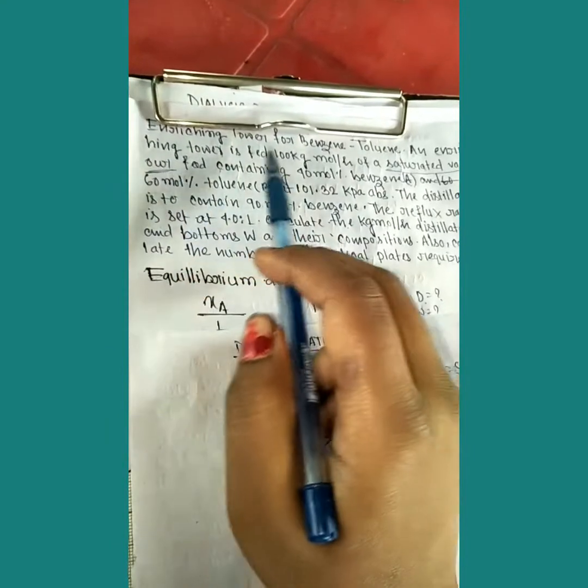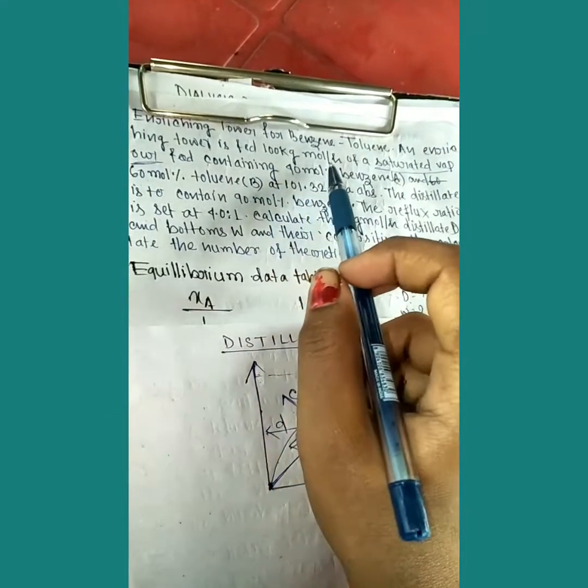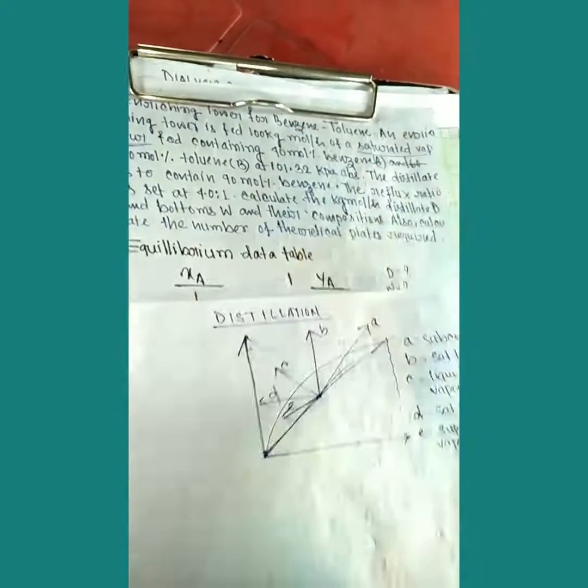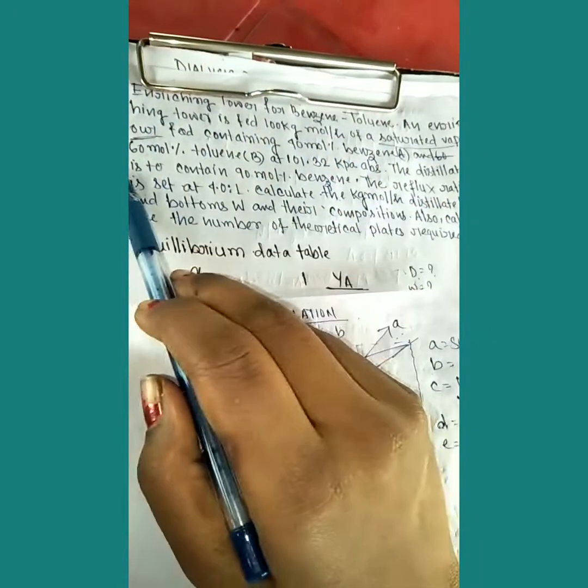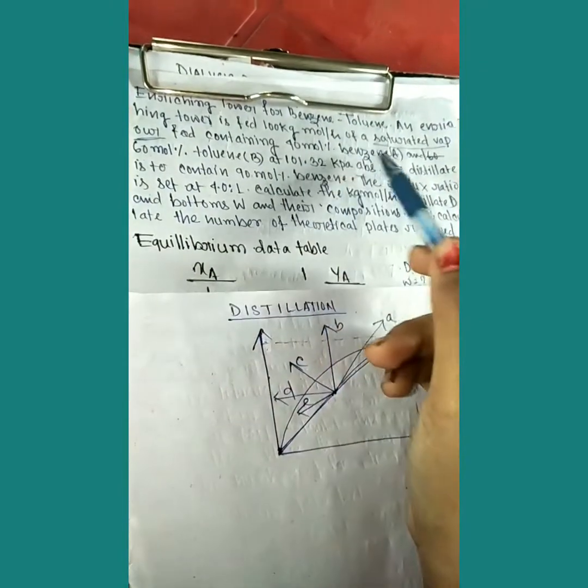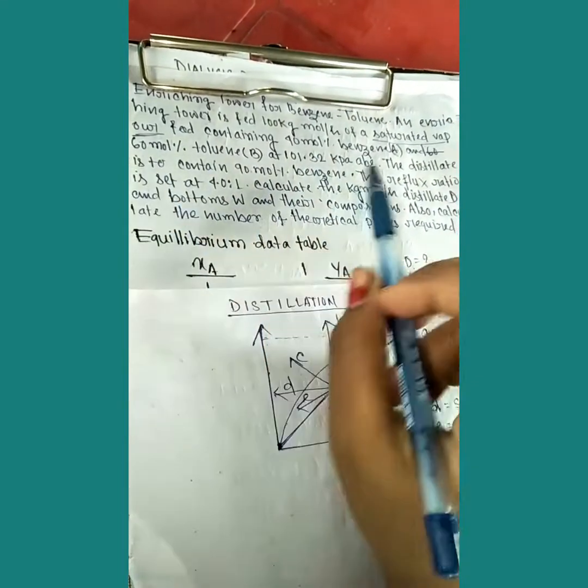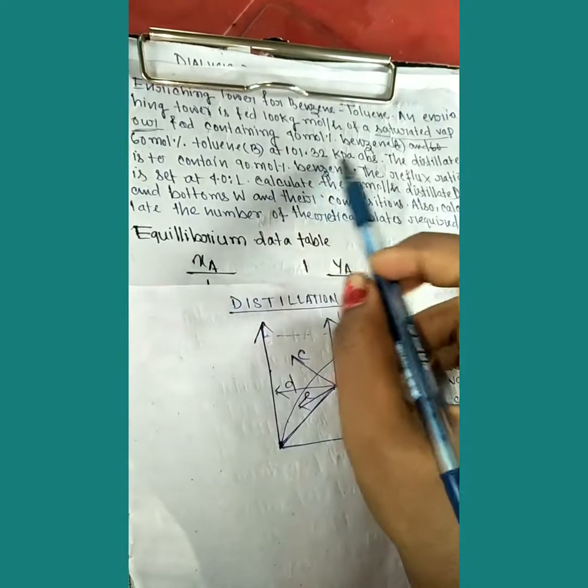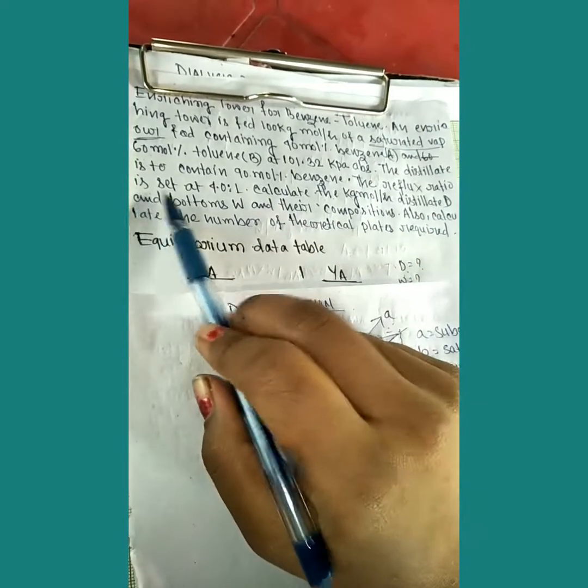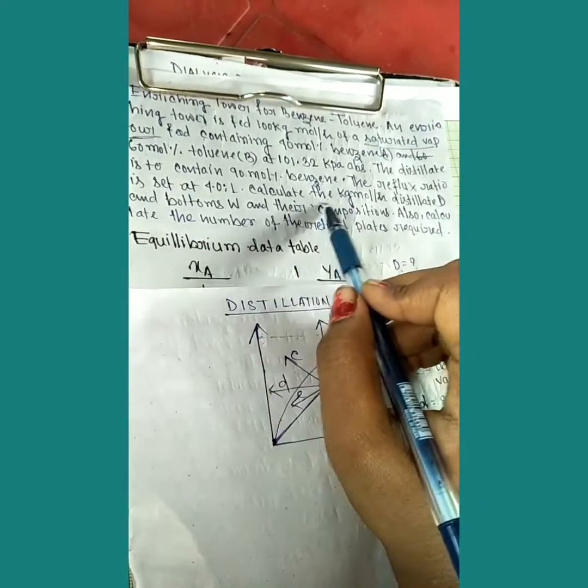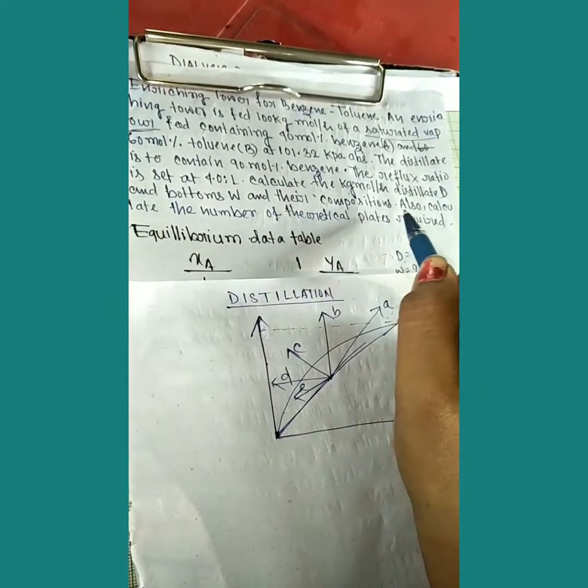Reading the question: An enriching tower for benzene-toluene distillation is fed 100 kg mole per hour of saturated vapor. Saturated vapor means a D-line feed. The feed contains 40 mole percent benzene, so xaf equals 0.4, and 60 mole percent toluene. The distillate contains 90 mole percent benzene.